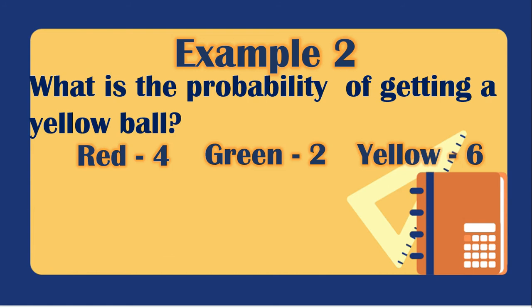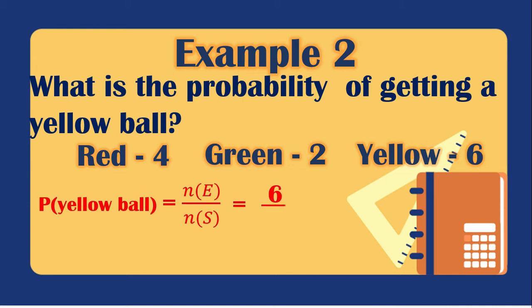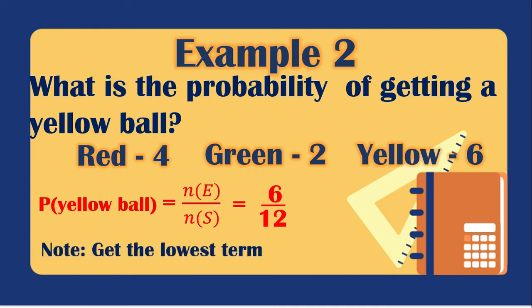What is the probability of getting a yellow ball? Using the same formula, the favorable outcome is 6 yellow balls over the total of 12. To simplify 6/12, the GCF of 6 and 12 is 6. So 6/6 = 1 and 12/6 = 2, giving us 1/2 chance of getting a yellow ball.